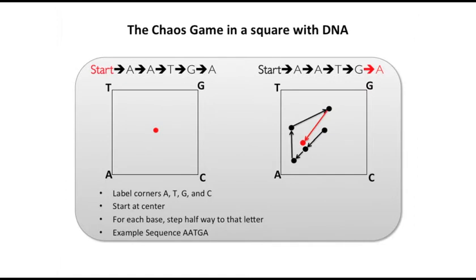We've started to play chaos games. We can look at deterministic chaos for DNA abnormalities. Let's play a chaos game — draw a square, put a point in the middle, and label the corners A, T, G, and C. Then with a sequence such as A, A, T, G, A, from the initial point you go halfway up to that corner letter each time. So if you have A, you go halfway up to A, then halfway up to A again, then to T, then to G, then to A.